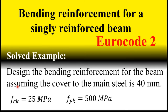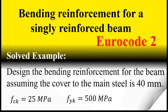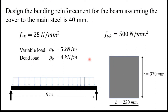In this video I'm going to show you how to design the bending reinforcement for a concrete beam. The problem asks to design the bending reinforcement for the beam, assuming the cover to the main steel is 40 millimeters. fck and fyk are given, along with variable load qk and dead load gk. The beam span is marked as 9 meters, and the cross-section height is 370 millimeters and width is 230 millimeters.